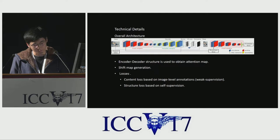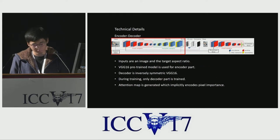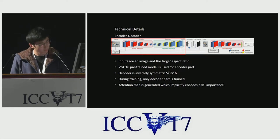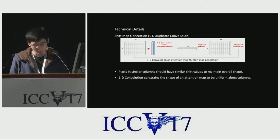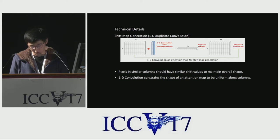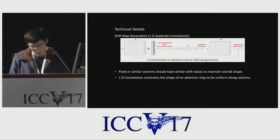The proposed method consists of three parts. The first part is a VGG16-based encoder-decoder model to obtain an attention map. From the attention map, a shift map is generated through one-dimensional duplicated convolution and cumulative normalization. When the convolution is performed on an attention map without padding, we replicate it to make it the same size as the attention map. The result is summed with the attention map itself. The reason a one-dimensional convolution operator is used is that pixels in similar columns should have similar shift values to maintain overall shape, constraining the attention map to be uniform along the columns.